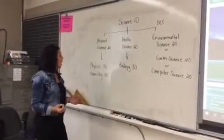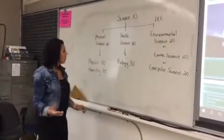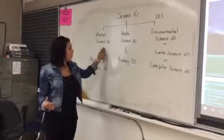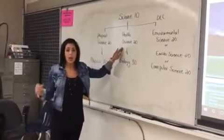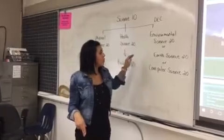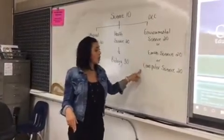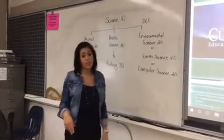Now in Eston, after Science 10, which is a required course, they have an option. Physical Science 20 and Health Science 20 are taught here at the school, but the students also have an option to take Environmental Science 20, Earth Science 20, or Computer Science 20 through distance learning courses.